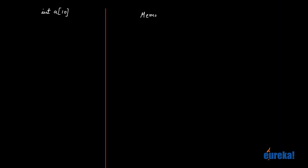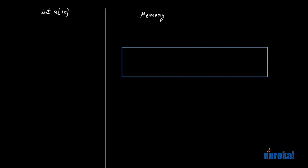Let's say this part is our memory. If I declare int A[10], in memory it's going to allocate 10 blocks, and each block is of size 4 bytes because it's an integer. So we have 10 blocks: this is A[0], this is A[1], A[2], A[3], and so on up to A[9].